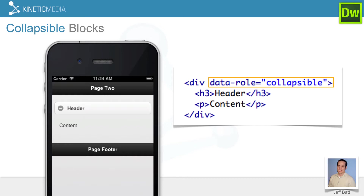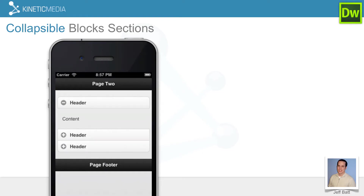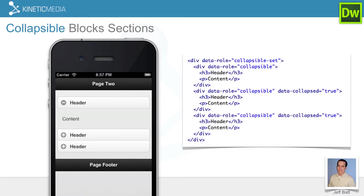You do have to have an H3 tag, which becomes the button inside of the header. Looking at the iPhone, you can see the button displays the header text. Anything after that, like a paragraph, is the content that gets expanded out — whether it's a video tag, an image reference, or anything like that. That's a single block. You can also create collapsible block sections, which is more than one button — this is really where the accordion view comes into play. You'll notice header one and header two: clicking header two will automatically collapse header one's content and expand header two. It's a nice feature. You just wrap the different collapsible blocks inside of a parent div tag and name that data-role equals collapsible-set.